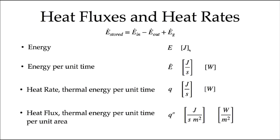We're talking about energy per unit time. Energy in the SI system has units of joules, and energy per unit time has units of joules per second, or watts. We're going to calculate the rate that thermal energy passes through materials or from a surface to a fluid moving over it. We'll call this the heat rate — the thermal energy per unit time transported from one place to another — and we'll give that the symbol Q, with units of watts.